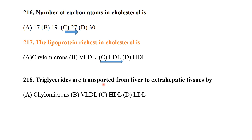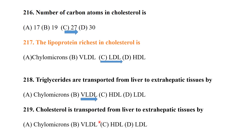Triglycerides are transported from liver to extra-hepatic tissue in the form of VLDL — very low density lipoprotein. Cholesterol is transported from liver to extra-hepatic tissue in the form of LDL — low density lipoprotein. These three MCQs are important and confusing: LDL is richest in cholesterol; triglycerides are transported by VLDL; cholesterol transport from liver uses LDL.